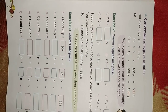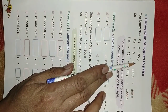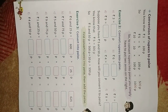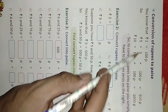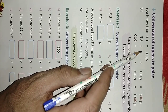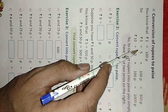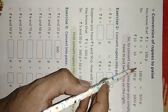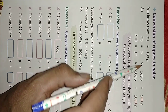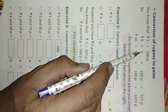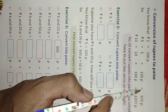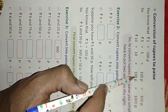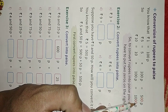Conversion of rupees into paisa. We know that 1 rupee is equal to 100 paisa, so to convert rupees into paisa we have to multiply the rupees by 100. Suppose we are converting 5 rupees into paisa — we multiply 5 by 100, so 5 into 100 is equal to 500. In multiplication, there is also a simple shortcut: just write 2 zeros after the number.